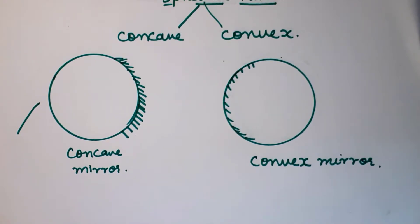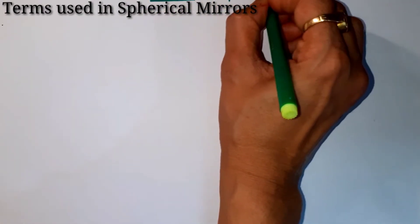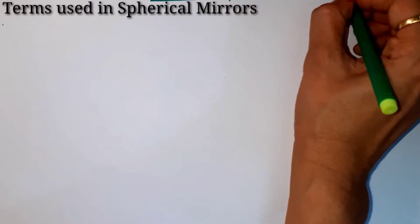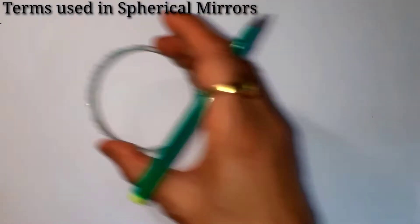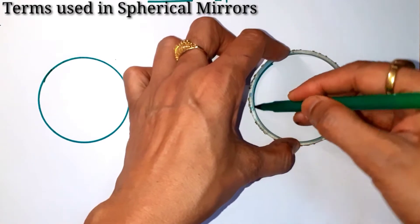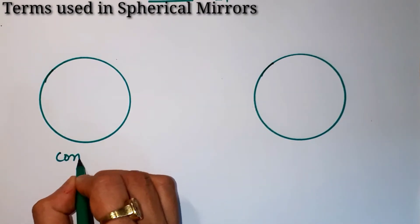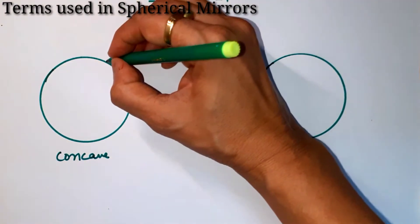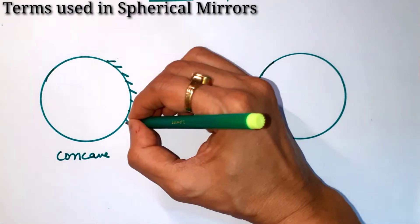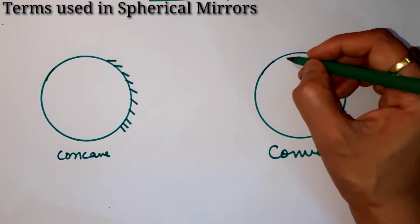Now we will discuss some terms which are very important and are used in spherical mirrors. We will draw a sphere — one we will use as a concave mirror and one as a convex mirror. In a concave mirror the polish will be on the outer side and the curve is on the inner side, and in a convex mirror the polish is inside.